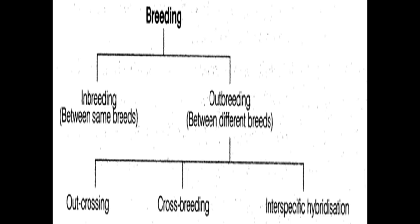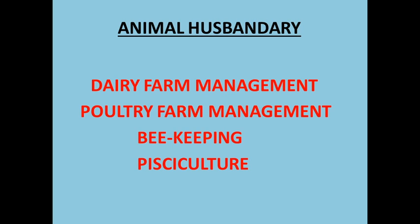Now let us learn something about beekeeping. In beekeeping — or apiculture — the rearing and management of honeybees for the production of honey and wax is known as beekeeping. For placing the hive, we choose a suitable location near flower orchards, because it will be easier for worker honey bees to collect nectar from nearby flowers.